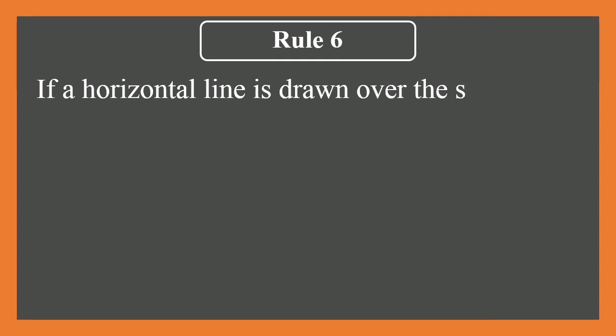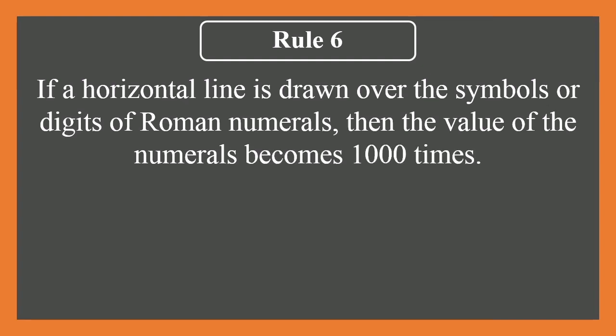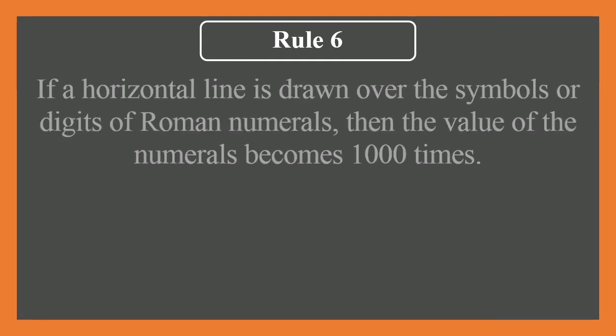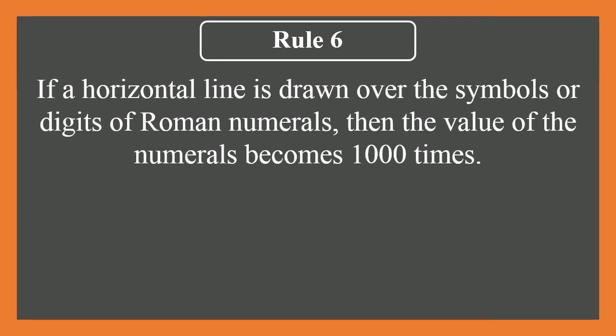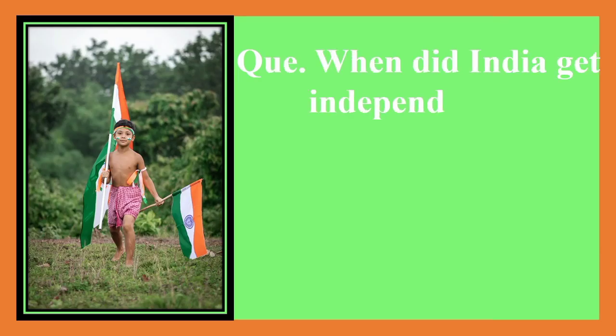And the last rule in case of writing Roman numerals: M stands for 1000, then what about bigger numbers, more than 5000 or 10,000? How to write these numbers? If a horizontal line is drawn over the symbols of the Roman numerals, then the value of the Roman numeral becomes thousand times. Let's see an example: we know XV equals 15, but XV with a bar equals 15,000. CLV equals 155, but CLV with a bar equals 155,000.